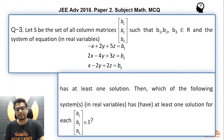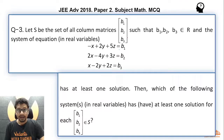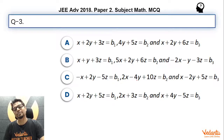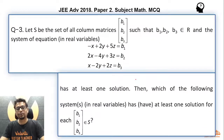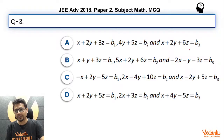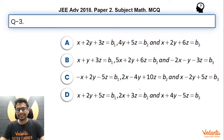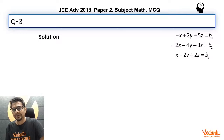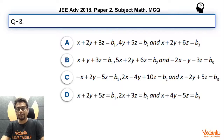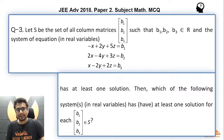So here, the column matrices [b1, b2, b3] are all such that this system of linear equations has at least one solution, and this set of column matrices is called capital S. What we are looking for is which of these four systems of linear equations has at least one solution for all of these column matrices [b1, b2, b3]. Note that b1, b2, b3 are being used in all four option systems. Let's explore.